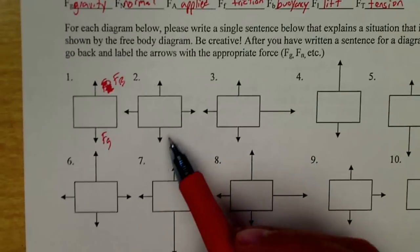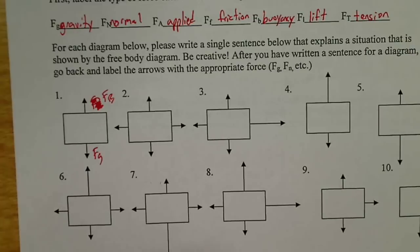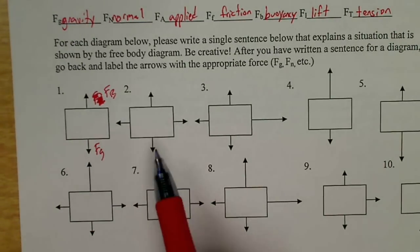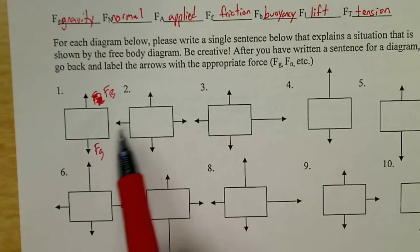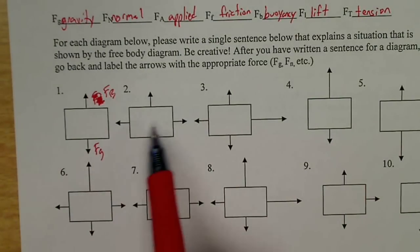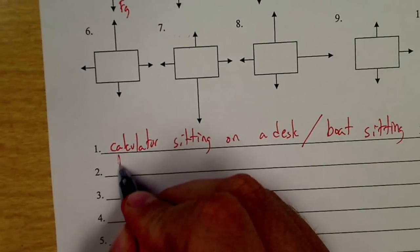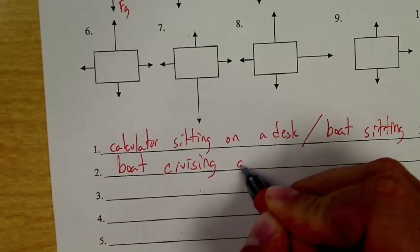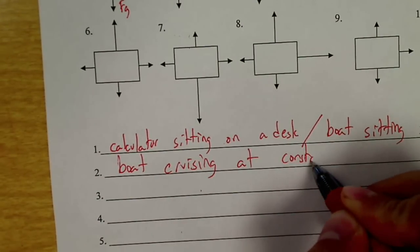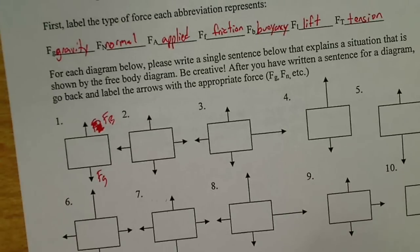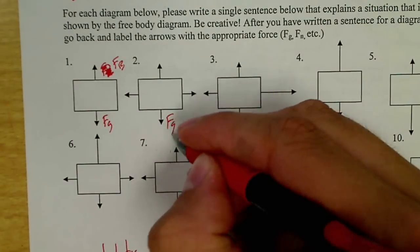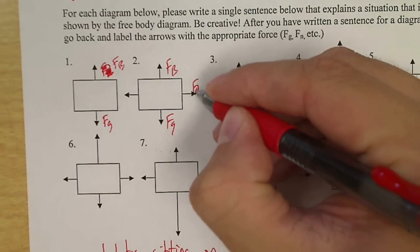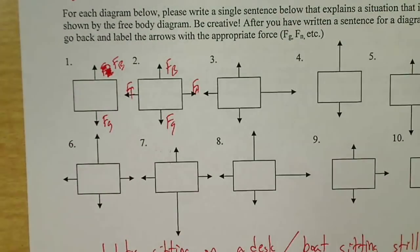So number two might be my boat still, it's not sinking or flying into the air. There's no acceleration in the vertical. But now it's moving at a constant speed. There's forces left and right. So we could say boat cruising at constant speed, which would make this the force of gravity, that the force buoyant, that would be my applied force, that would be a frictional force.